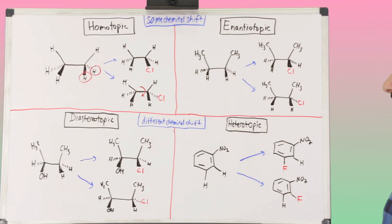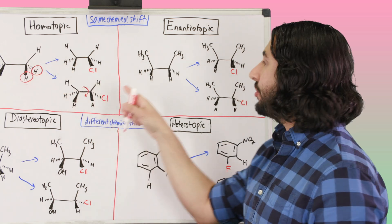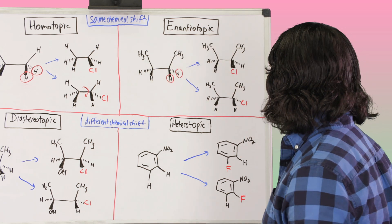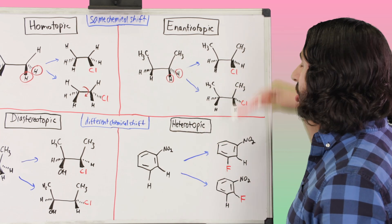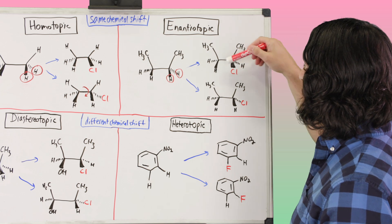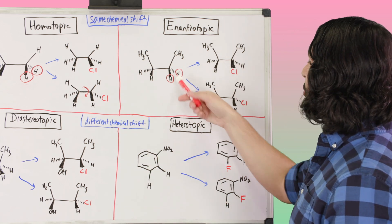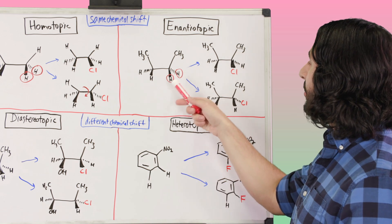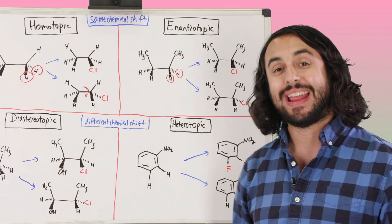Now let's look at enantiotopic. We perform the exact same test, but instead of ethane we're looking at butane — we have two methyl groups instead of hydrogen. We turn the hydrogen on the wedge into chlorine for one molecule, and the hydrogen on the dash into chlorine for the other. In this case we are generating a chiral center, because there are four different groups: methyl, hydrogen, chlorine, and the rest of the molecule. We generate opposite stereochemistry at this center depending on which hydrogen we replace, so these two molecules are enantiomers — therefore these protons are enantiotopic.